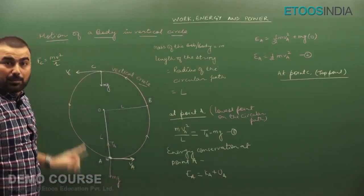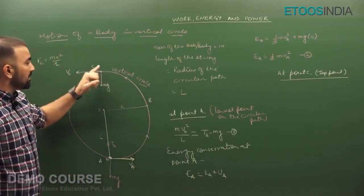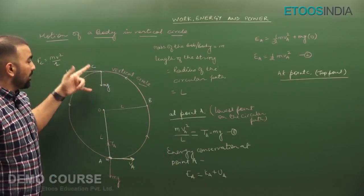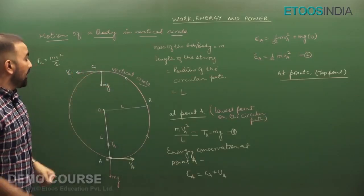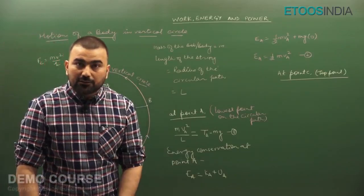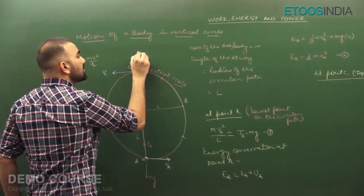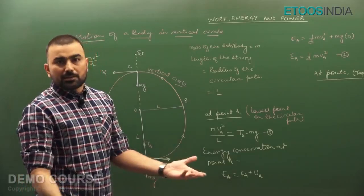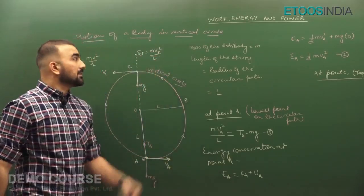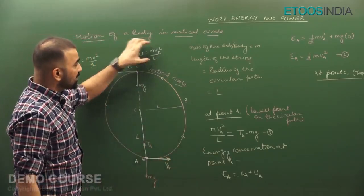If the velocity is insufficient, the body won't complete the circular path and will fall. So we need the minimum velocity such that the body reaches point C. At point C, velocity is tangential, and tension T_C = 0. The net centripetal force equals Mg only. So Mv_C²/L = Mg. Cancelling M: v_C²/L = g, giving v_C = √(gL). This is equation number three.